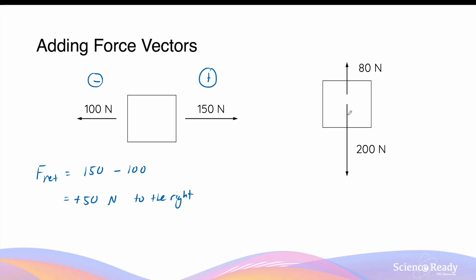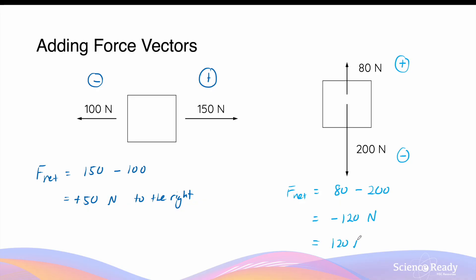The example on the right-hand side is very similar. However, we have two force vectors acting in the vertical direction: 80N acting upwards and 200N acting downwards. Again, before we perform calculations, it is important to define the positive direction, which is usually upwards, and the negative direction, which is usually downward. The net force in this example is equal to 80N upwards minus 200N acting downwards, and this gives an answer of minus 120N, which is the same as saying 120N downwards.